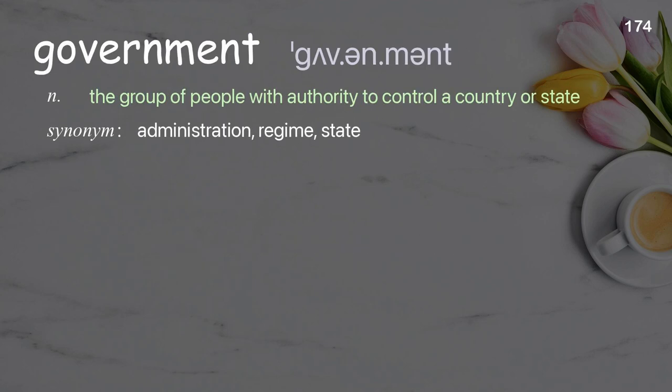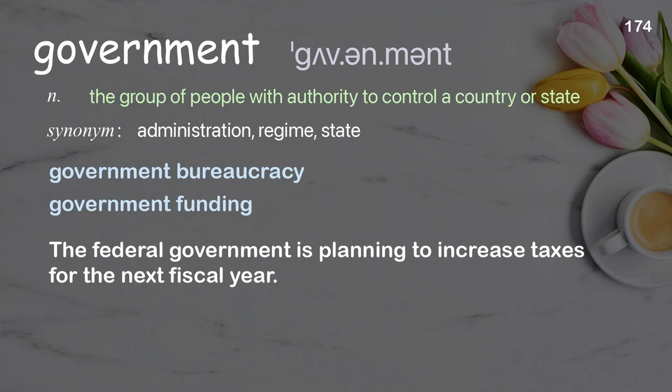Government: the group of people with authority to control a country or state. Examples: government bureaucracy, government funding. The federal government is planning to increase taxes for the next fiscal year.